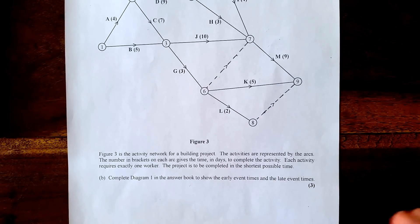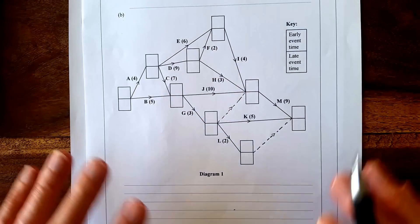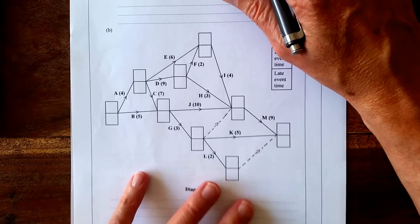Part B says complete diagram 1 in the answer book to show the early event times and the late event times. So here it is. Rather than do part A, I'll come back to that and do part B now.